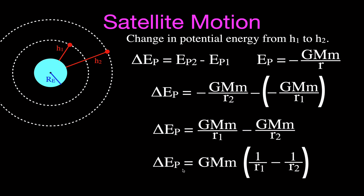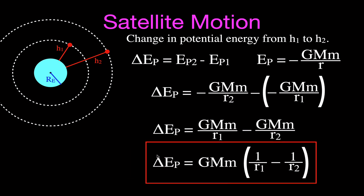This is the equation we use to find the change in potential energy. The change in potential energy will be positive in this case because r1 is less than r2, so 1/r1 gives a larger number. Remember that the radius r is not just the orbital height — r is the radius of the Earth plus the height above the Earth's surface. You have to add those two values together, as you'll see in the example we're going to do in just a moment.